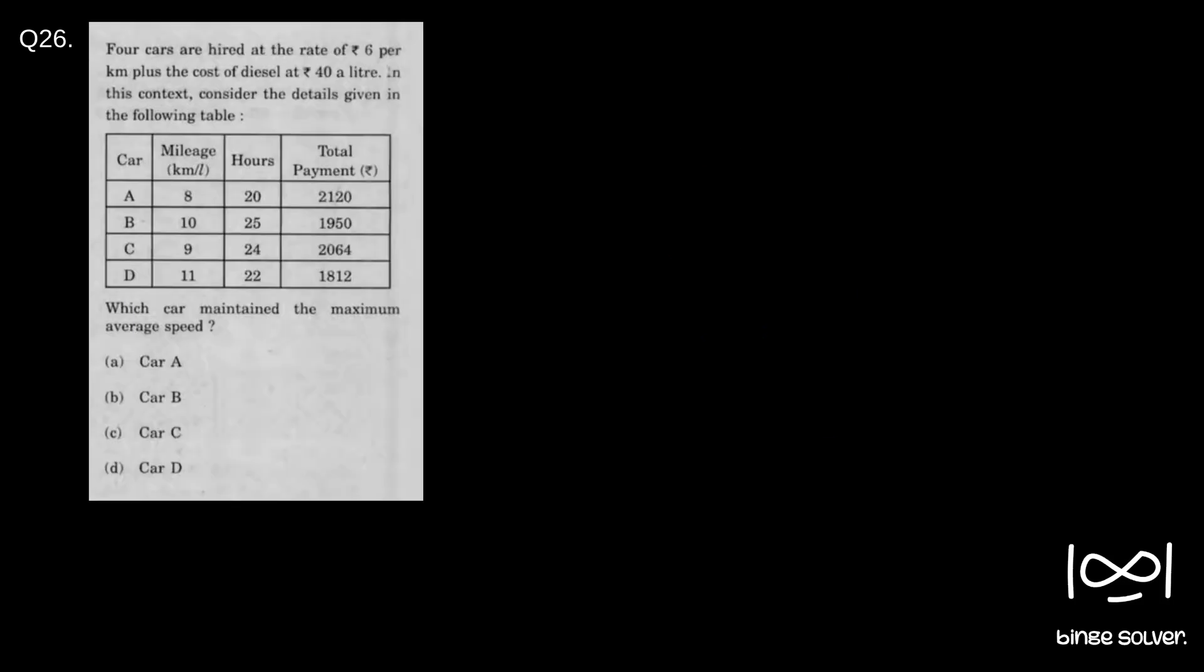Question 26. Four cars are hired at the rate of 6 per kilometer plus the cost of diesel at 40 a litre. In this context, consider the details given in the following table. Some information is given and which car maintains the maximum average speed - car A, car B, car C, or car D.